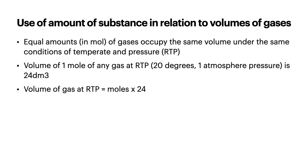Finally, looking at volumes of gases: equal amounts in moles of gases occupy the same volume under the same conditions of temperature and pressure. This generally tends to be room temperature and pressure, referred to as RTP. RTP is 20 degrees Celsius and one atmosphere pressure. One mole of any gas at RTP is 24 decimetre cubed, and the volume of gas at RTP equals moles times 24.